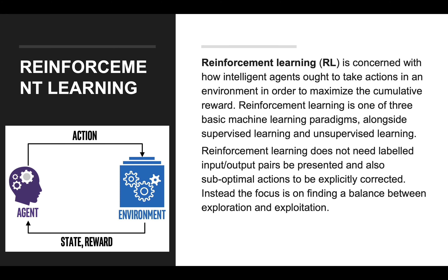Reinforcement learning is concerned with how intelligent agents ought to take actions in an environment in order to maximize the cumulative reward. It is one of the three basic machine learning paradigms alongside supervised learning and unsupervised learning. Reinforcement learning does not need labeled input or output pairs. Instead, it focuses on finding a balance between exploration — territory that is undiscovered — and exploitation, where the agent applies its current knowledge.